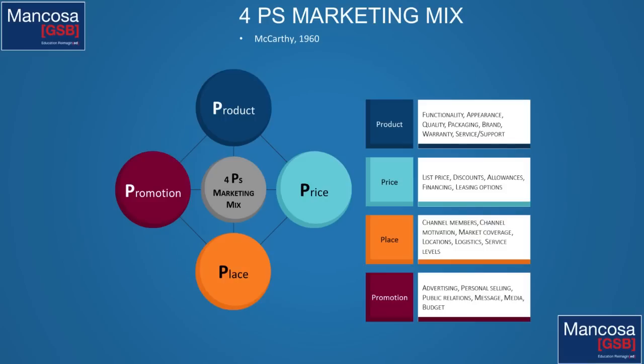Price is really important: it refers to the value you are setting on your product, it positions your product and brand against competition, and it's where you're going to make your money — as long as the consumer agrees with the value you're offering and how much it costs them to acquire the product. Place covers your channel members, channel motivation, and market coverage — which retailers are you going through? Are you going to have your own stores like Levi's, or sell through Edgars and be one brand amongst many? Place is a positioning tool that gets your product right to your target market.